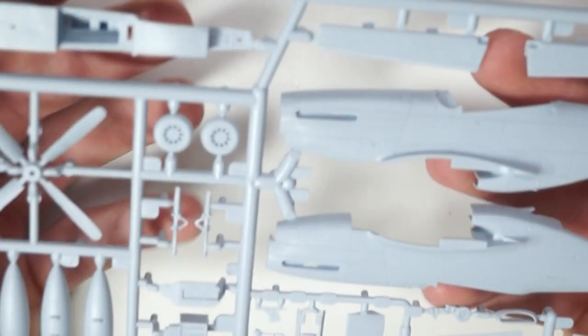The first sprue. You get the two fuselage halves, the external fuel tanks, the prop, the cockpit parts. Looking at the sprue, there's a few bits free from flash. The detail's crisp. The moldings look nice and crisp.